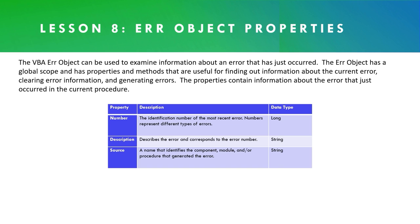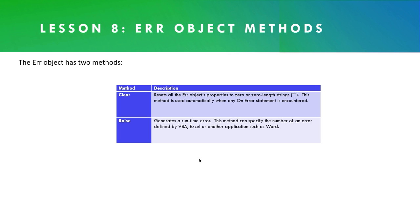All three error object properties have data types as listed. The error object only has two methods: Clear and Raise. Clear resets all the error object's properties to zero or zero-length strings, and is used automatically when any On Error statement is encountered. The Raise method generates a runtime error and can specify the number of an error defined by VBA, Excel, or another application such as Word. It'll start making sense when we start doing it, which is right now.